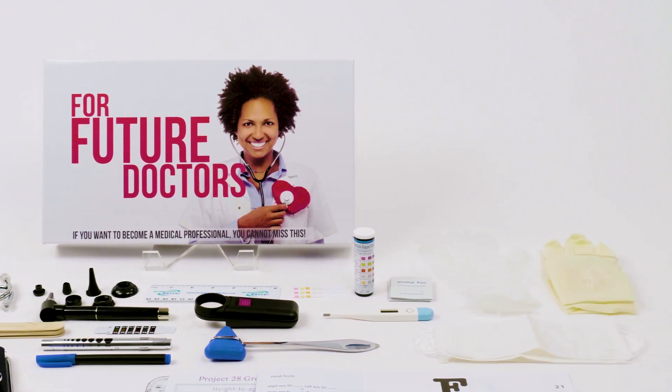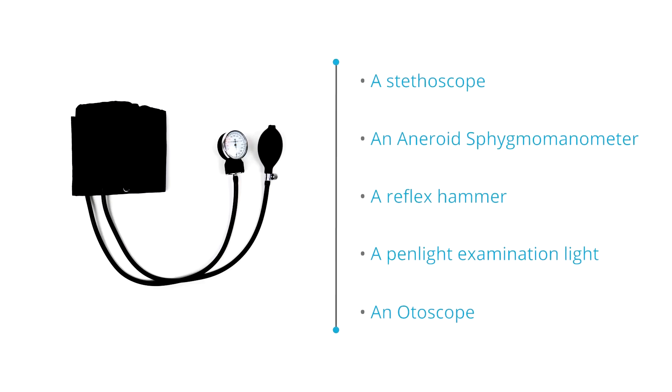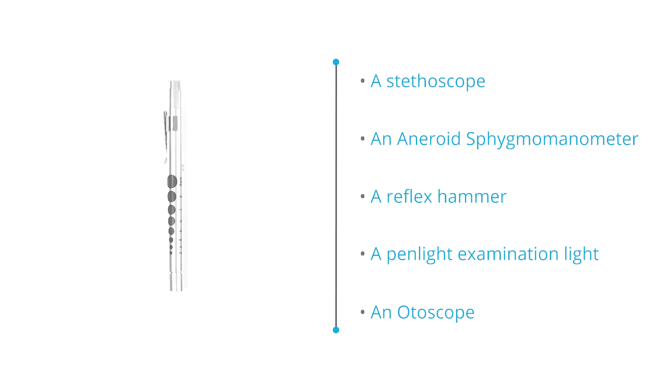The Apprentice Doctor for Future Doctors Foundation kit contains a stethoscope, an aneroid sphygmomanometer, a reflex hammer, a pen light examination light, and an otoscope.